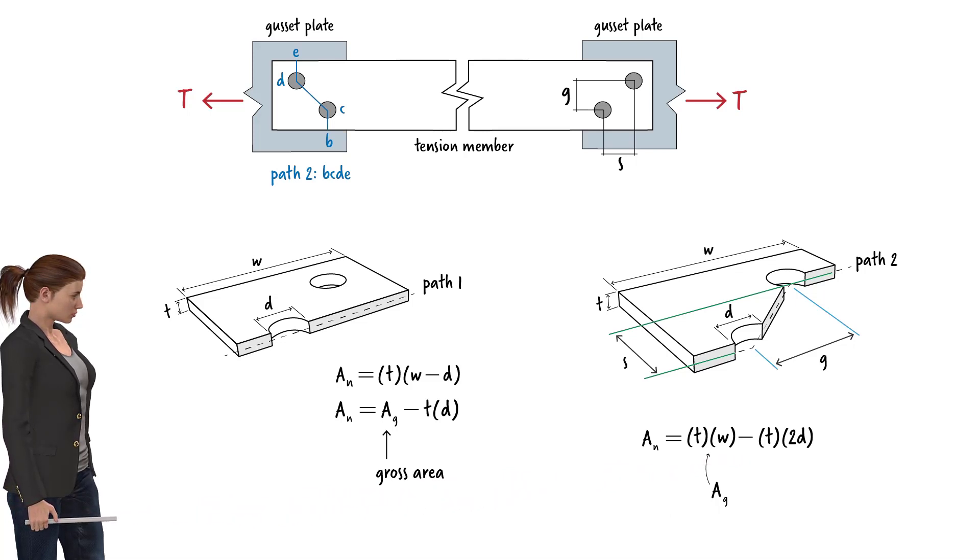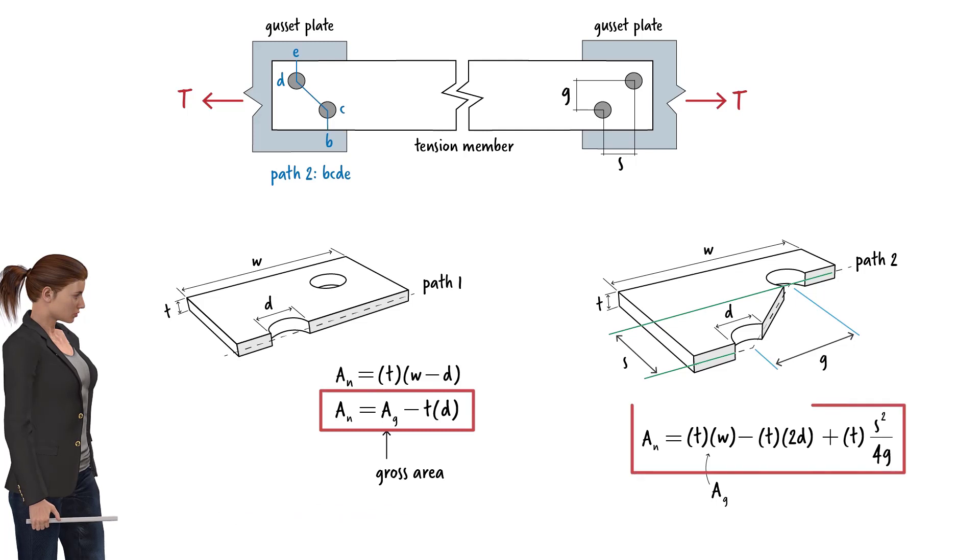We compare the values obtained from these two equations. The path with a smaller net area is the critical path of failure.